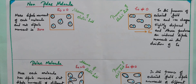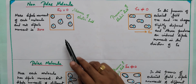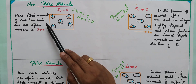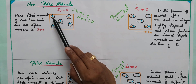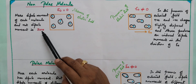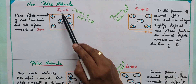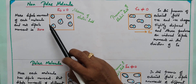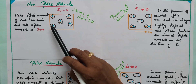Now we can see what happens when a non-polar molecule is placed in an external electric field and also in the absence of an external electric field. When there is no external electric field, positive and negative charges are coinciding and not separated, so each molecule does not have any dipole moment. The dipole moment of each molecule is zero, and since each molecule has no dipole moment, the net dipole moment is also zero.